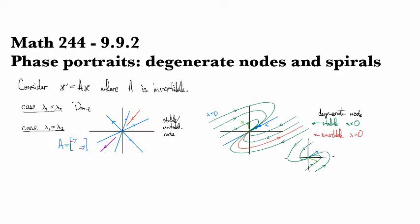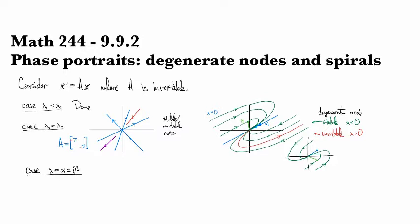Okay, and then the last thing that we have to consider is the case of complex conjugate roots. So this is when lambda looks like alpha plus or minus i beta. And this is the case when we get rotation. And so if we have, say we've got alpha positive, then in this case, you're going to have trajectories that come out like this.